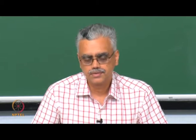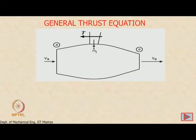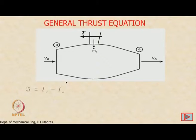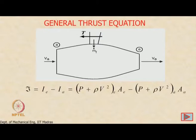In the previous class, we looked at the general thrust equation for an aircraft engine where air enters with velocity Va and leaves with velocity Ve. We applied the impulse function at sections E and A, calculating thrust as IE minus IA, where I is the impulse function P plus rho u squared times A. Expanding this gives the thrust expression.